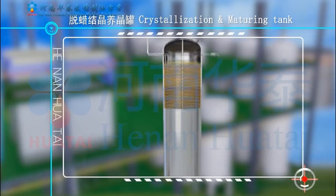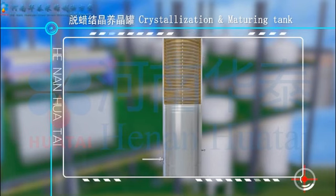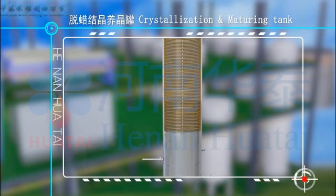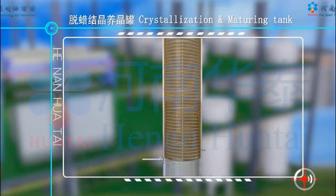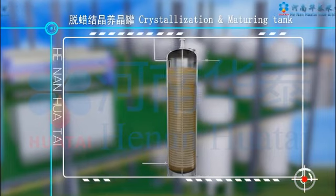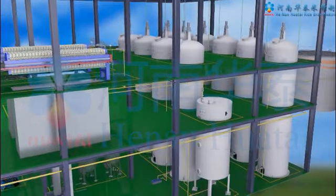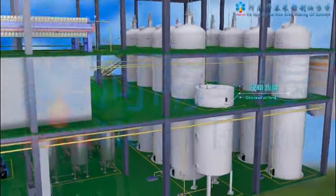The de-waxing crystallization and maturing tank is a vertical structure with a stainless steel coil tube inside to lower the temperature, matching with the PLC cooling curve to ensure the crystallization achieves the best effect.